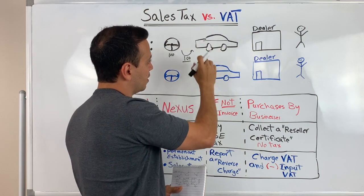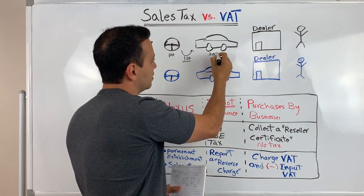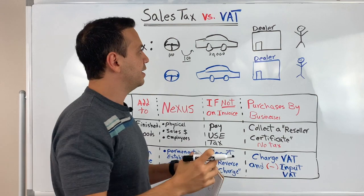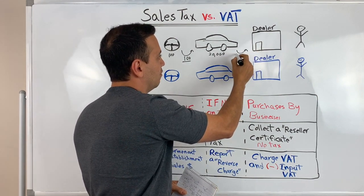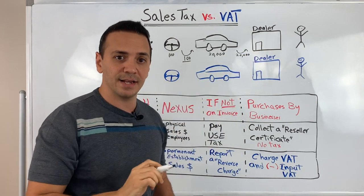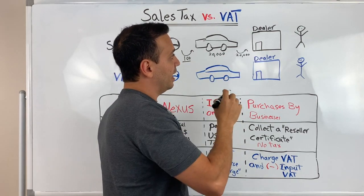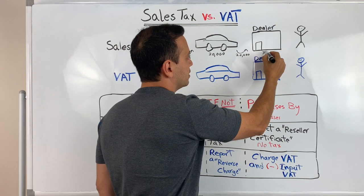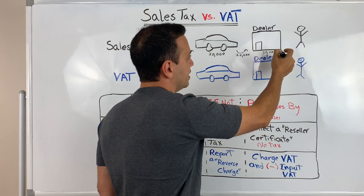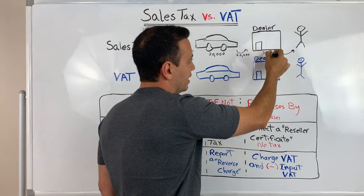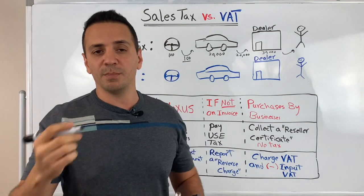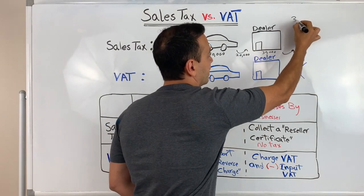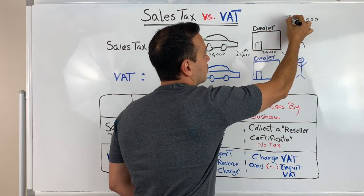The car manufacturer then manufactures the car and wants to sell it for $20,000. They do the same thing with the dealer — they get a reseller certificate from the dealer and send an invoice for $20,000 without any sales tax added to it. Then the dealer wants to sell it to the end consumer for $30,000. So they sell it to the end consumer for $30,000 plus sales tax. Every state is different — let's say it's 10% sales tax, so this becomes $33,000 for the final price.